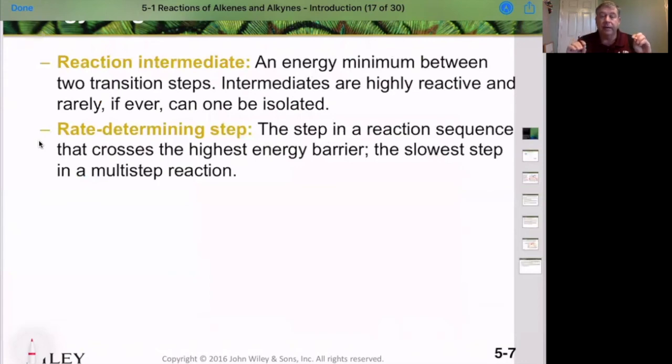So again, to reiterate, the reaction intermediate is a highly reactive species, but it can be isolated. The transition state is just happening instantaneously and cannot be isolated. The intermediate can be isolated. That's the big difference between transition state and intermediate. Typically, the rate determining step is the highest energy barrier. Whichever energy barrier is the highest of that activation energy tends to be the slow step in a reaction. Most of the time, it is the first step in the reaction.